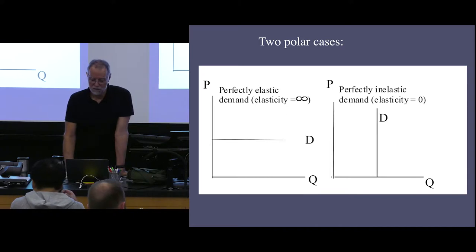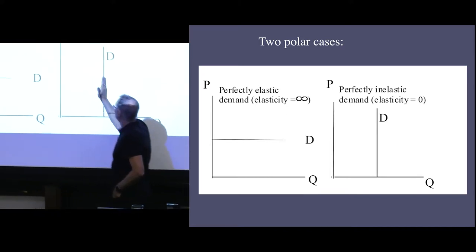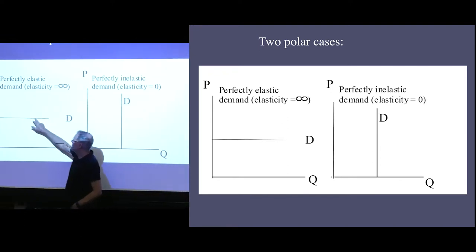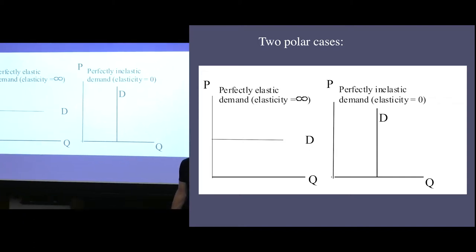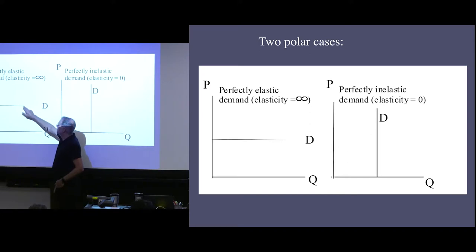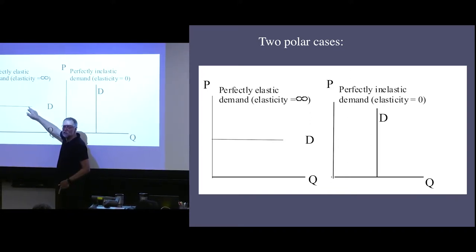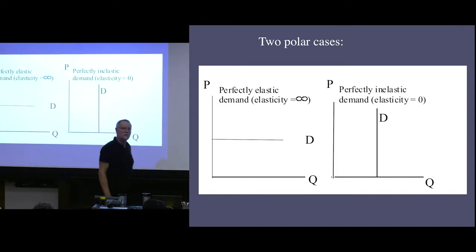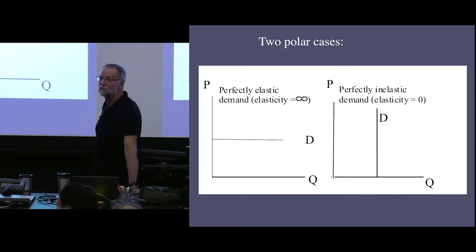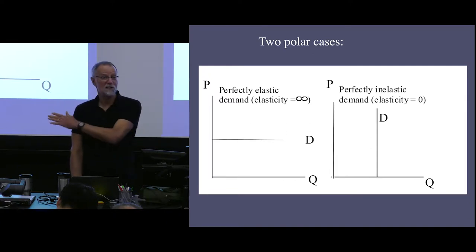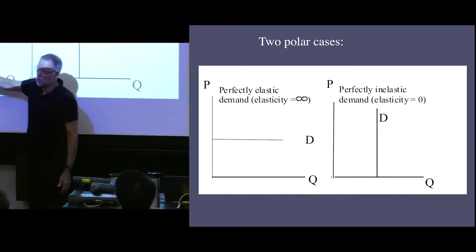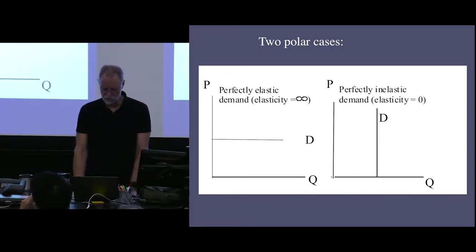Here are two polar cases. A perfectly elastic demand curve is horizontal — raise the price and nobody buys. Slope = 0, so 1/slope = infinity, elasticity = infinity. A perfectly inelastic demand curve is vertical — raise the price and quantity doesn't change at all. Slope = infinity, so 1/slope = 0, elasticity = 0. We'll see the horizontal case when we get to competitive firms.